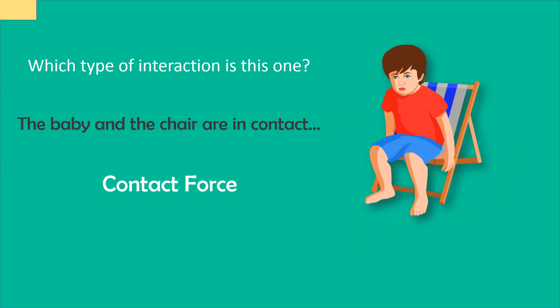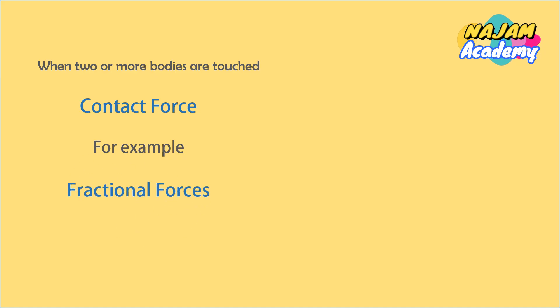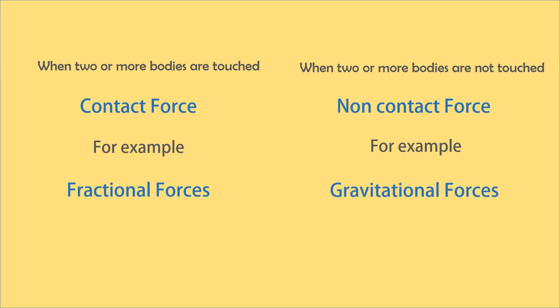To sum up: when two or more bodies are touched with each other and they interact, the force among them is a contact force — for example, all fractional forces are contact forces. On the other hand, when two or more bodies do not touch each other but they still interact, the force among them is a non-contact force. For example, a gravitational force, an electric force, and a magnetic force are all non-contact forces.